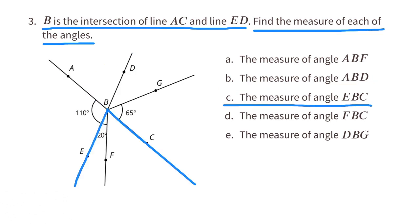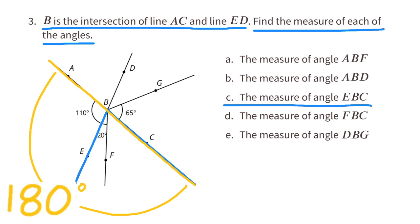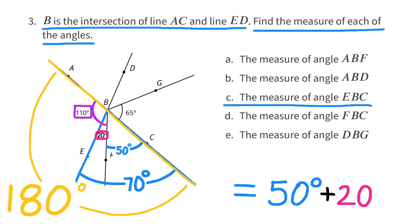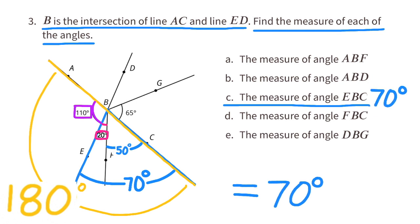C: the measure of angle EBC. We know the straight line ABC is 180 degrees, angle ABE is 110 degrees, and angle EBF is 20 degrees. So 180 minus 110 minus 20 equals 50, meaning angle FBC is 50 degrees. Adding EBF and FBC: 50 plus 20 equals 70 degrees, so angle EBC is 70 degrees.